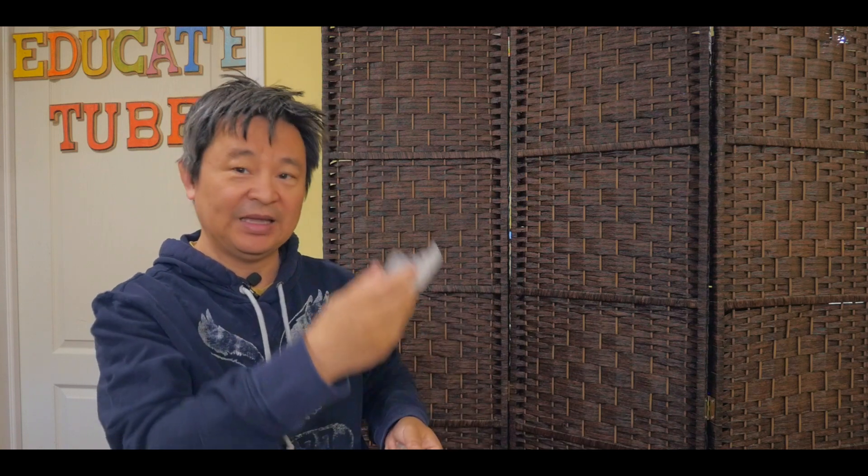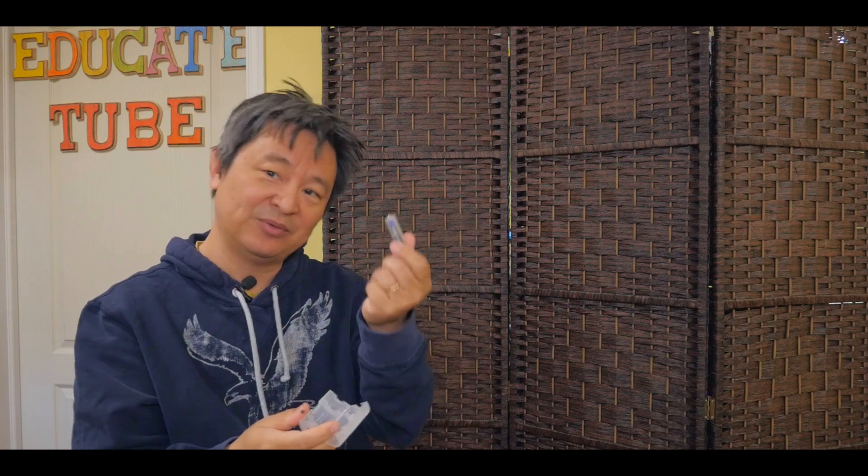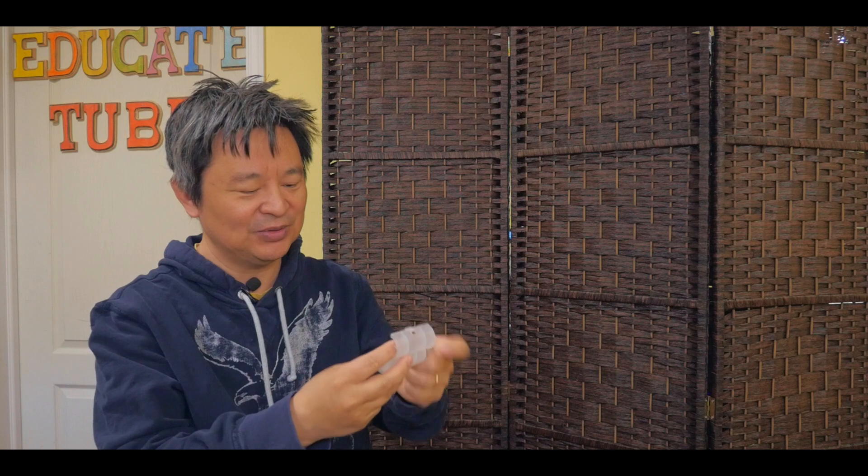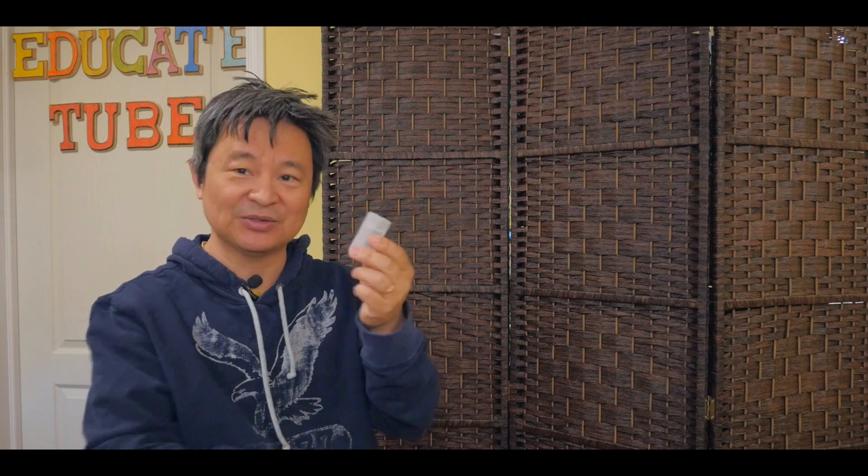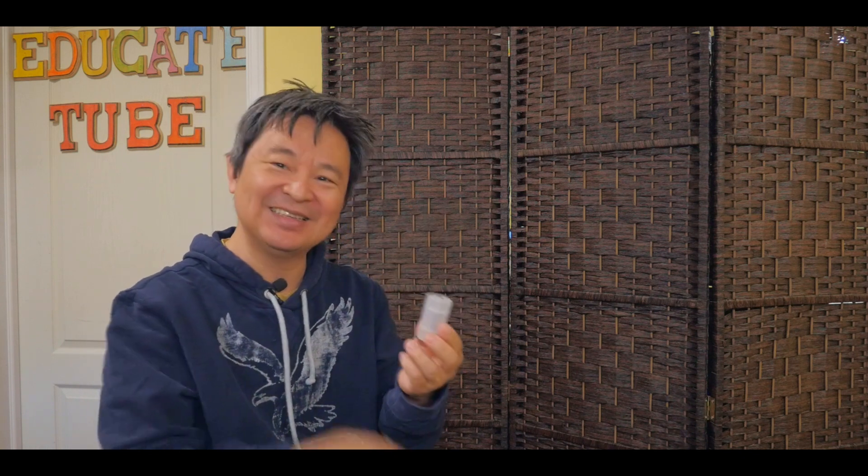So here we have an AA, which originally was AAA, converted to AA. And now we put it into a D type battery. So here we have a D type converter, AA to D casing. Let's see if I can put it in like that. There we go. So now we have a D type battery. Let's see how powerful it is.